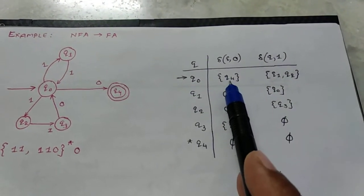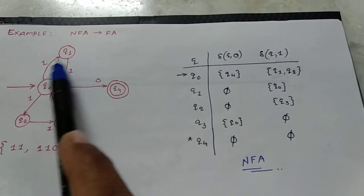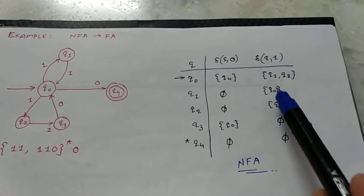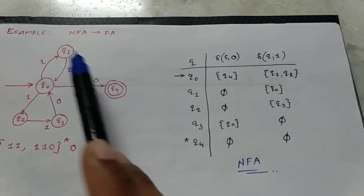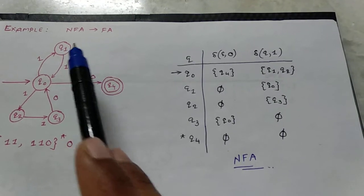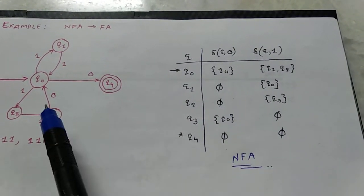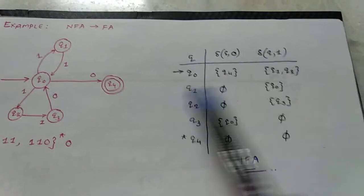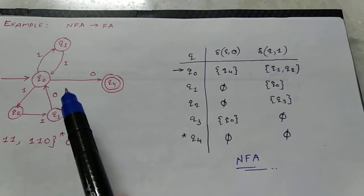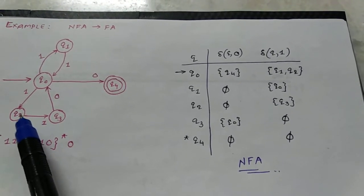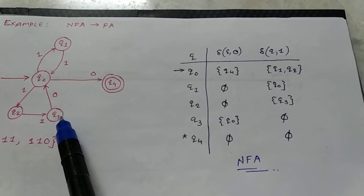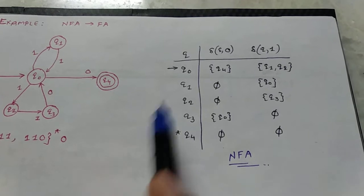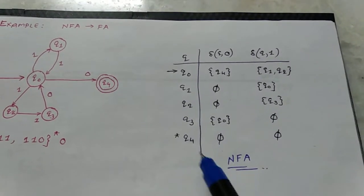So q0 to 0 is q4. q0 to 1 is q1 comma q2. q1 to 0 has no input, so it's phi null string. q1 to 1 is q0.